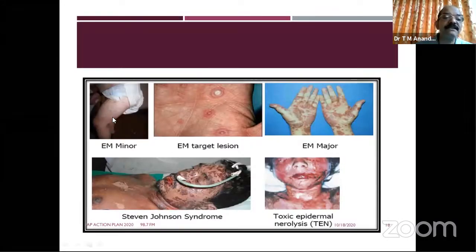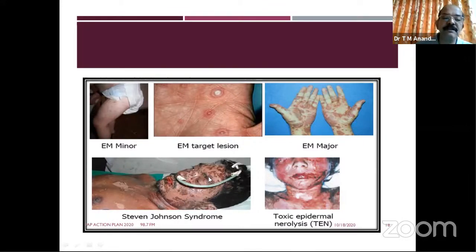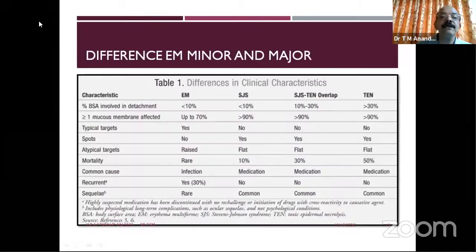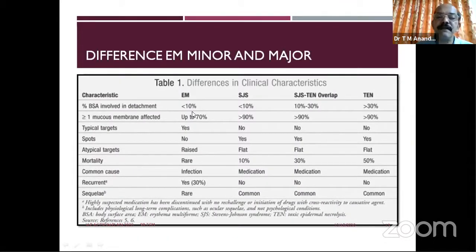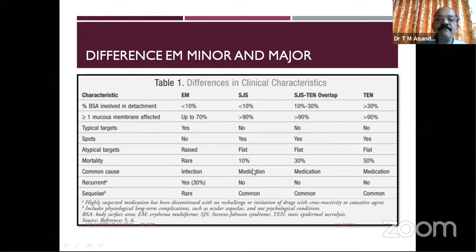You can see multiple target lesions involving the whole body. Stevens-Johnson syndrome involves 10–30% body surface area, and TEN is more than 30% — very serious, with both skin and mucous membranes involved. A common cause may be drugs or infections, but in all these conditions you must stop the offending medication. Importantly, some drugs like lamotrigine may take two to three weeks to develop the reaction — not immediately after taking the drug.